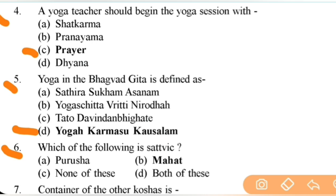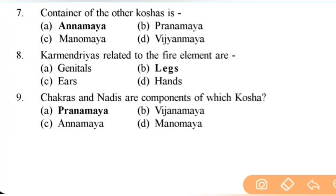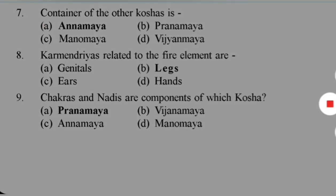Which of the following is Sattvic? Right answer is B. Next: container of the other koshas — very important question — right answer is A — Annamaya Kosha. Next: Karmendriyas related to the fire element are — right answer is B — legs. Next: chakras and nadis are components of which kosha — very important — right answer is A — Pranamaya Kosha.